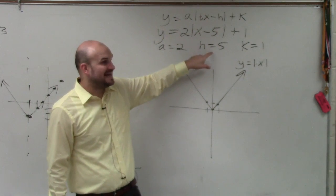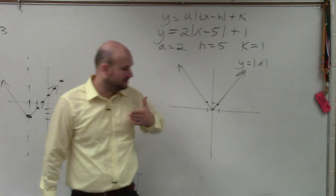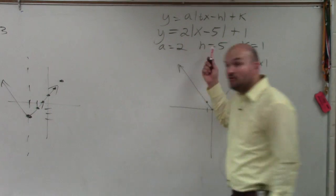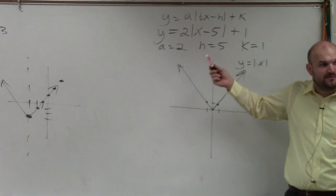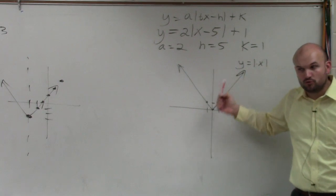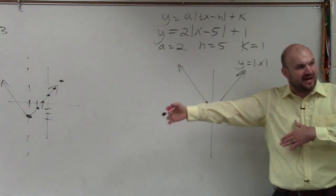So first of all, h tells you to shift the graph h units, left and right, horizontal shift. So 5, since h is 5, that's going to tell me to shift my graph 5 units to the right. It's confusing because people see the negative in the equation, and they want to go to the left.